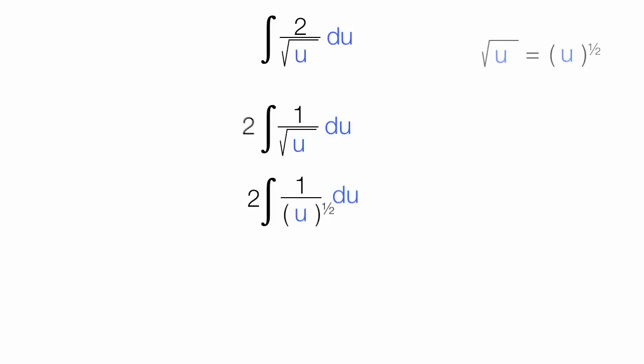I can also write this as 2 times the integral of 1 times u to the negative 1 half power, du. Now I'm going to take the anti-derivative of this. So I have 2 times 1 times u raised to the negative 1 half power plus 1, like that.